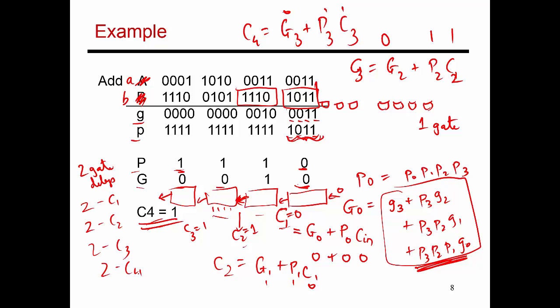But now, because of these abstractions, with every two gate delay, I'm actually jumping ahead four bits. This helped me to go from the carry of the first bit to the carry of the fifth bit, and then to the carry of the ninth bit, and then thirteenth, and then the seventeenth. So that's the reason that we kind of came up with these abstractions.